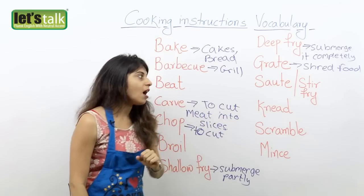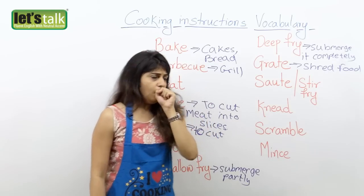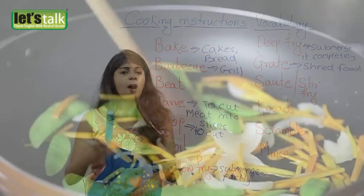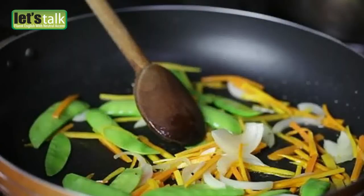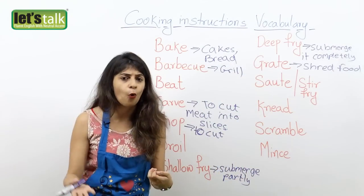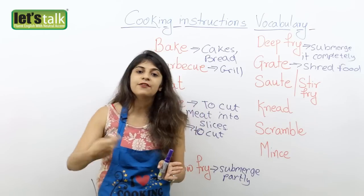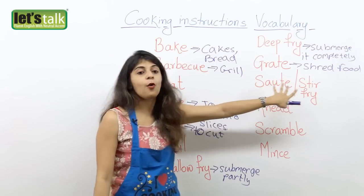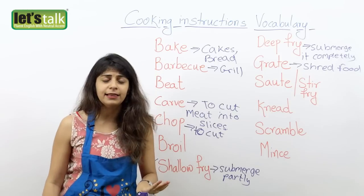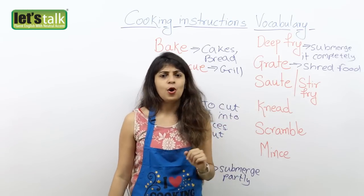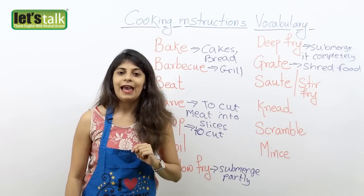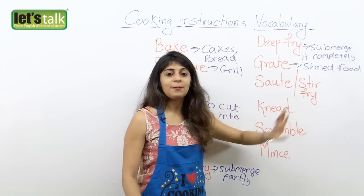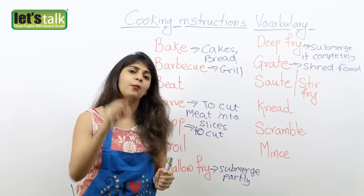Now the next one is sauté or stir fry. Sauté or stir fry means you put your veggies or probably meat in a hot pan, where you add a little oil, and you sauté the veggies or meat quickly on heat. That's called sauté or stir fry. It's extremely healthy — you can sauté or stir fry veggies every night for dinner. So that's what sauté or stir fry means: mixing it in your frying pan with a little bit of oil.